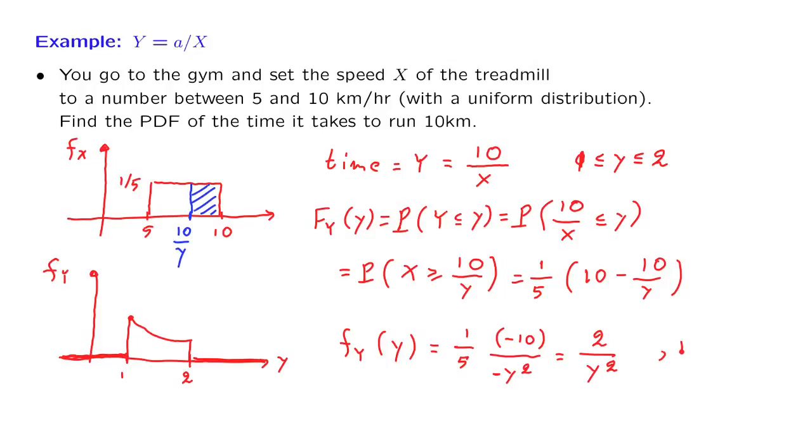And this is the form of the PDF of the random variable y. This is the form which is true when y lies between 1 and 2. And, of course, the PDF is going to be 0 for other choices of little y.